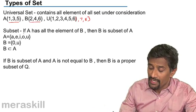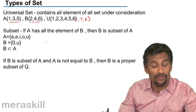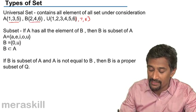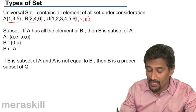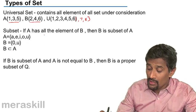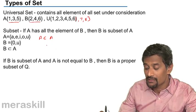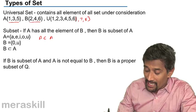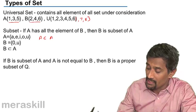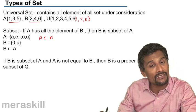Now the concept of subset: if A has all the elements of B, then B is a subset of A. For example, A is {a, e, i, o, u} and B is {o, u}. A contains all the elements of B, so B is a subset of A. Remember, every set is also a subset of itself — A contains all the elements of A, nothing more is required.